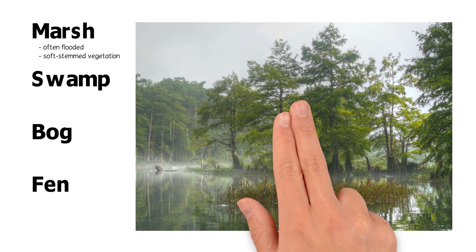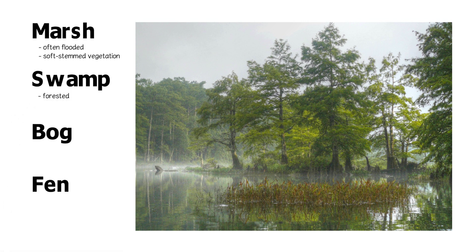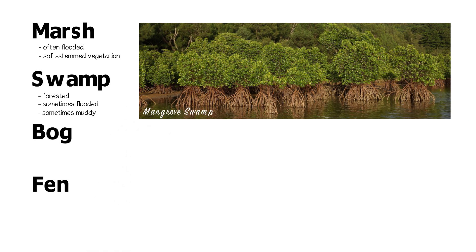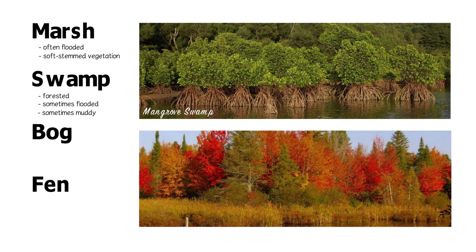A swamp is a forested wetland with woody plants such as trees and shrubs. Sometimes swamps are completely flooded, but many swamps are often just saturated or muddy. Some of the forested wetlands found in the United States include Bald cypress swamps in the southeast coastal plain, Mangrove forests along southern Florida and the Gulf Coast, and red maple swamps in the northeast U.S.